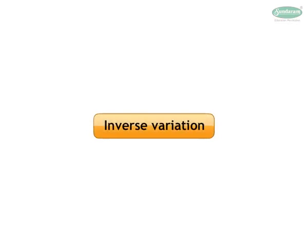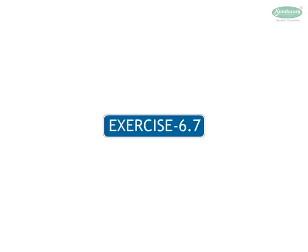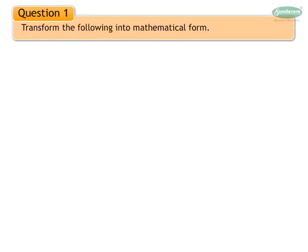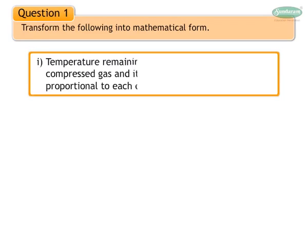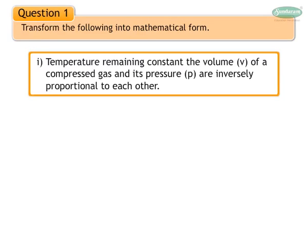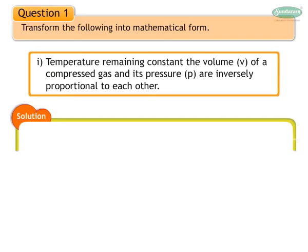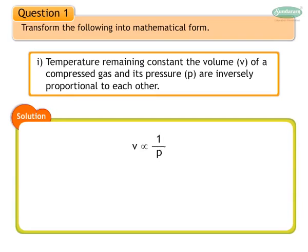Students, let us start inverse variation by solving problems on it. Exercise 6.7, Question 1: Transform the following into mathematical form. Problem 1: Temperature remaining constant, the volume of a compressed gas and its pressure are inversely proportional to each other. We express the relationship between volume and pressure symbolically, giving V is equal to K upon P, where K is a constant. Therefore, V into P is equal to K.